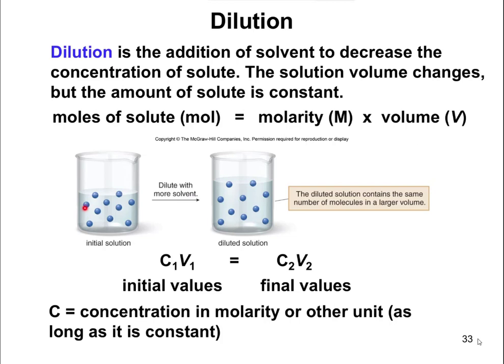If you count the blue spheres, there are ten of them — and when you come over to the diluted solution on the right, you also still have ten. So your amount of the solute doesn't change. But because it's in a larger volume, you say it's going to be more dilute.